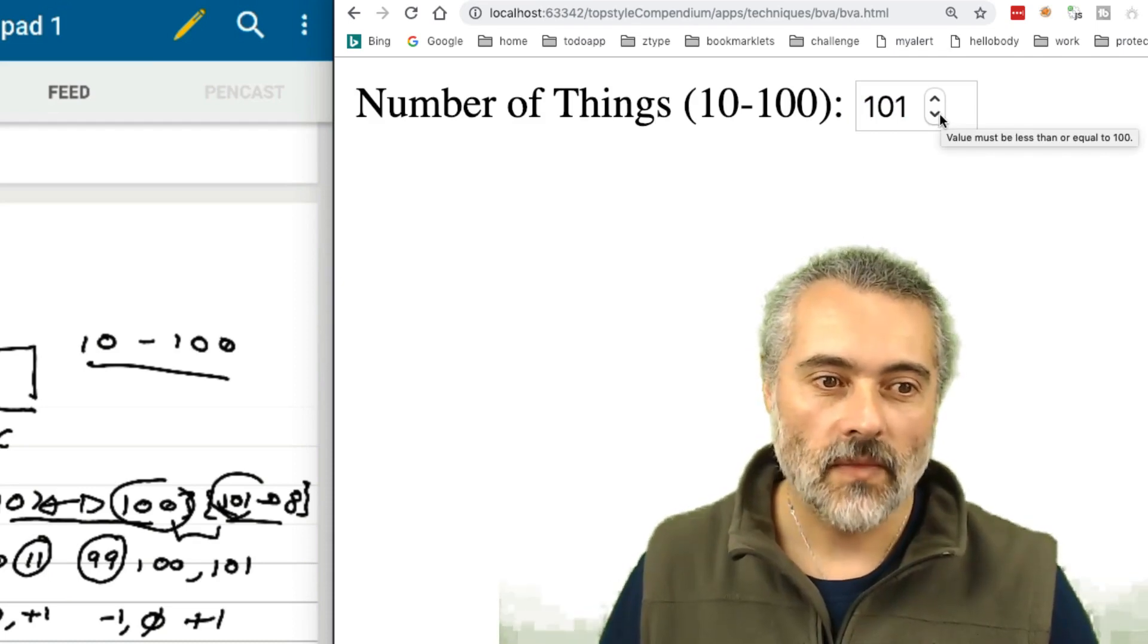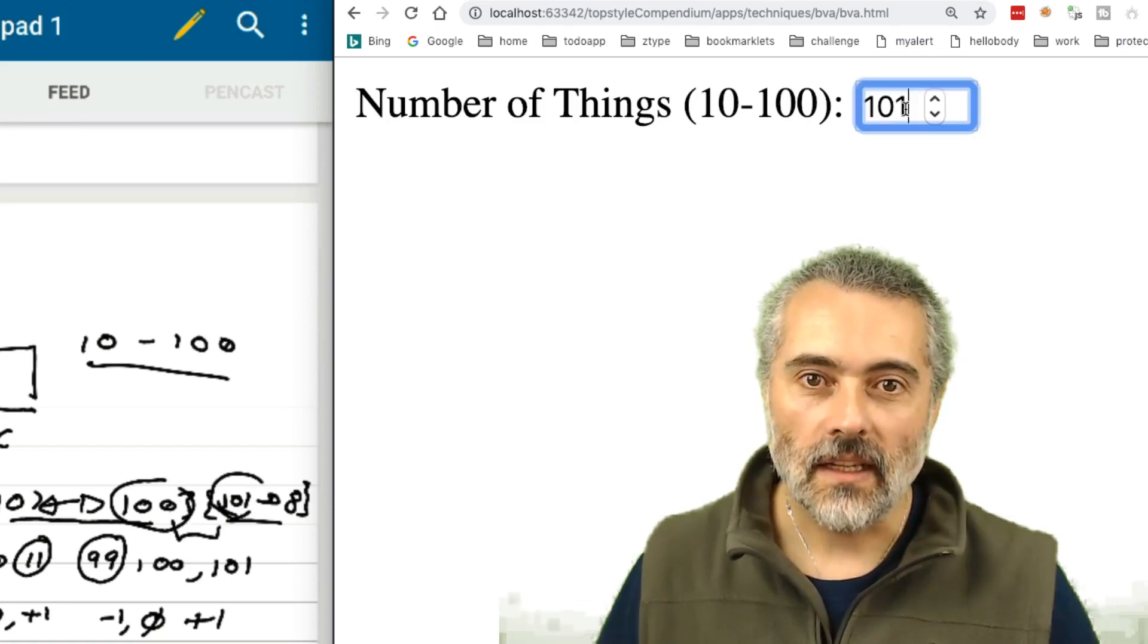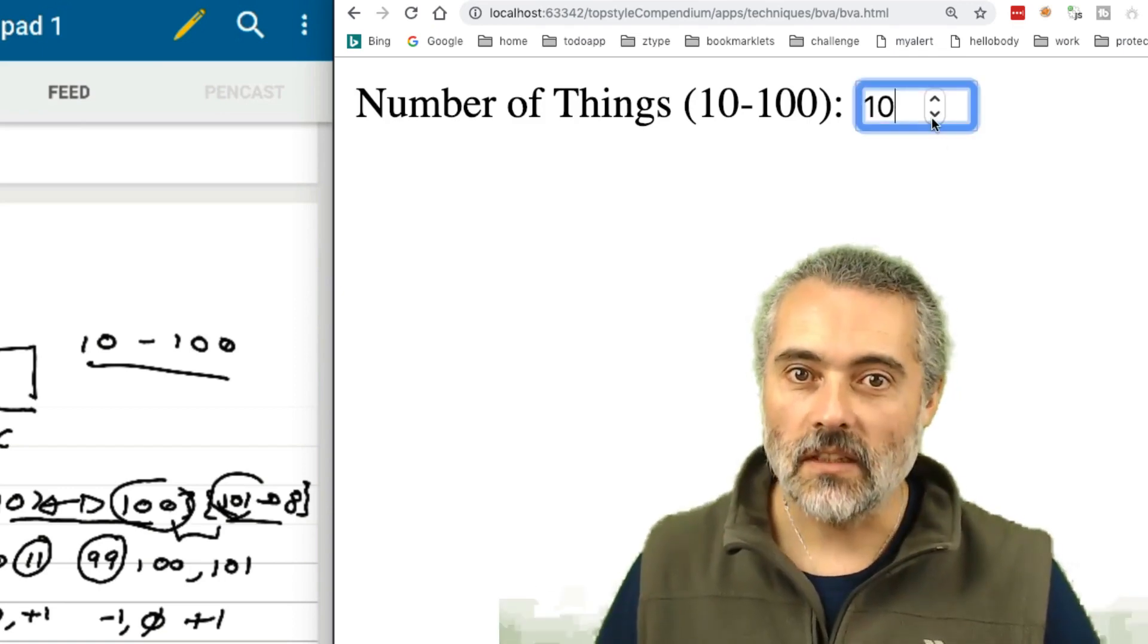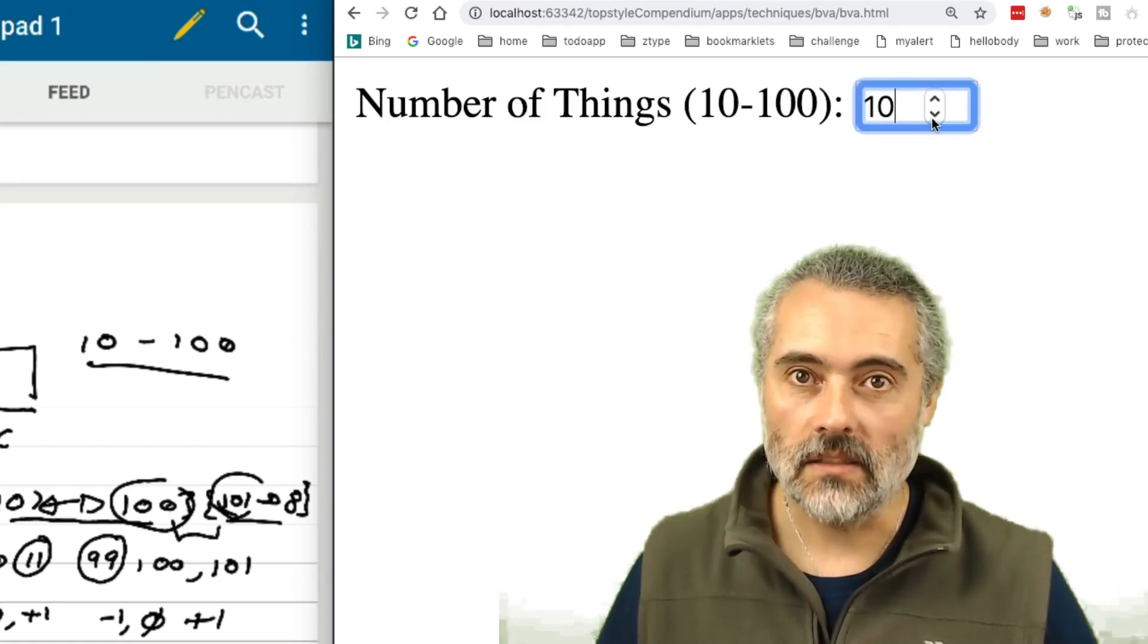So we put in our values, 100, 101, 9 and 10. And we've seen that they're marked as valid and invalid.